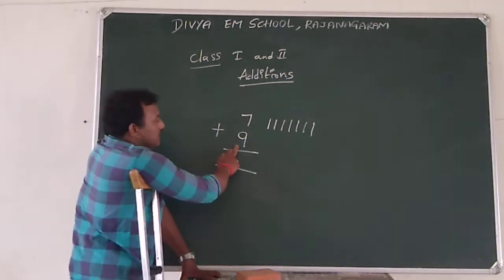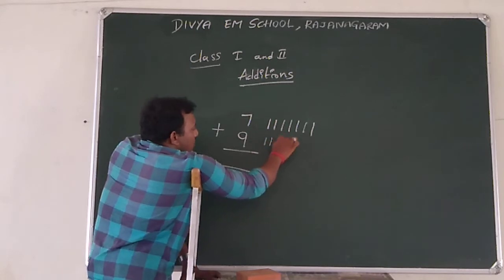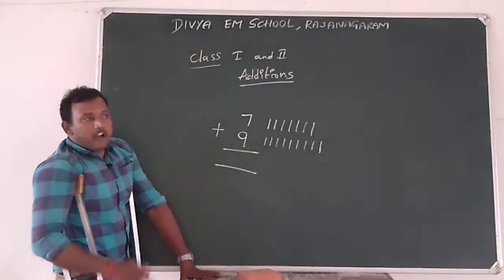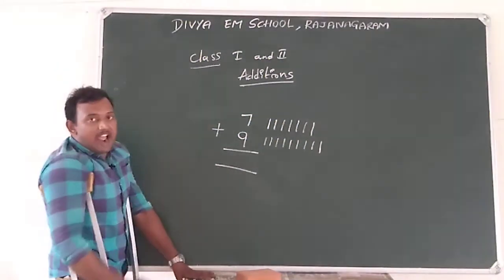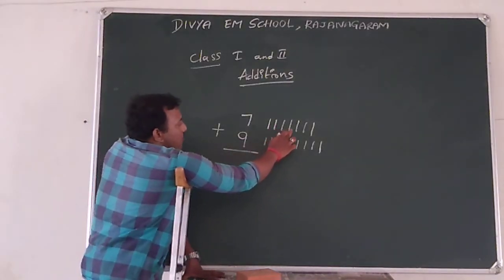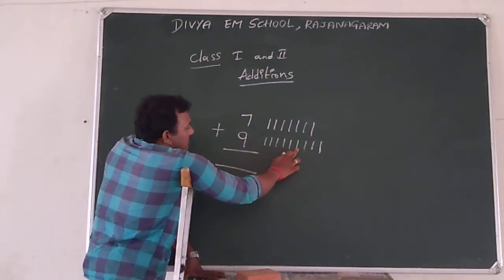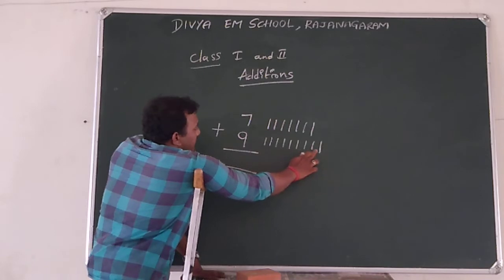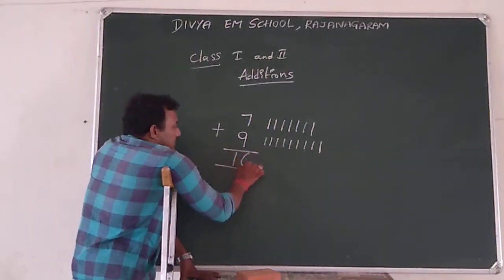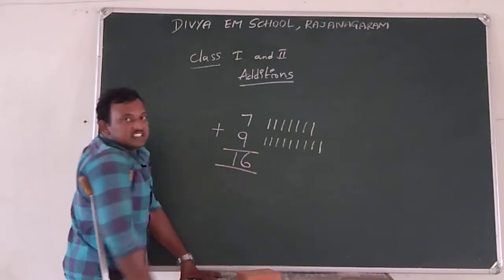And for 9, we are going to take 9 sheets: 1, 2, 3, 4, 5, 6, 7, 8, 9. Now we are going to count these 7 and 9 total sheets: 1, 2, 3, 4, 5, 6, 7, 8, 9, 10, 11, 12, 13, 14, 15, 16. So the total is 16. When we add 7 to 9, the total is 16.